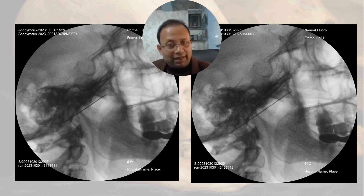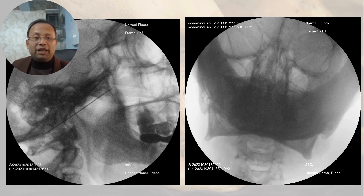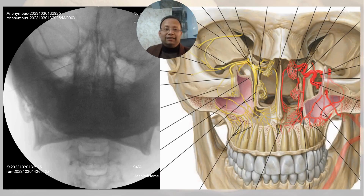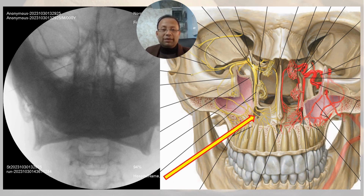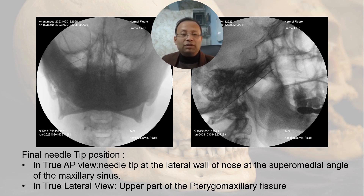Here on the right side, you may think the needle has reached the target area, but if we see the corresponding AP view, the needle tip is still far from the correct area. The needle has been progressed further and the needle tip has now reached the lateral wall of the nasal bone. You can compare with the schematic diagram — the needle trajectory is expected to be like this. This is the final needle tip position: in the true AP view, the needle tip is at the lateral wall of the nose at the superior and medial aspect of the maxillary sinus. In a true lateral view, this is the upper part of the pterygopalatine fissure.